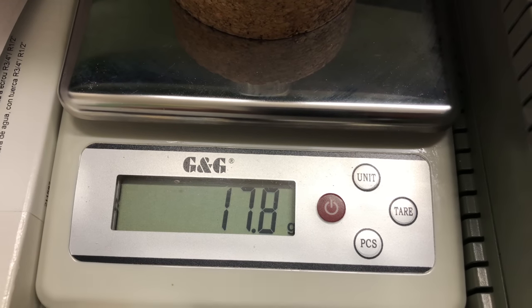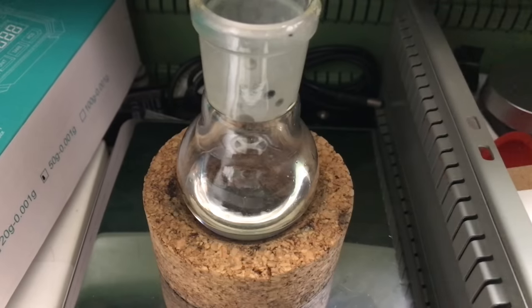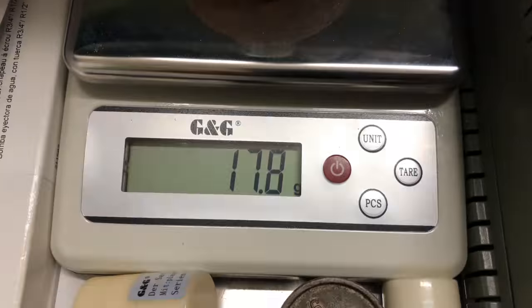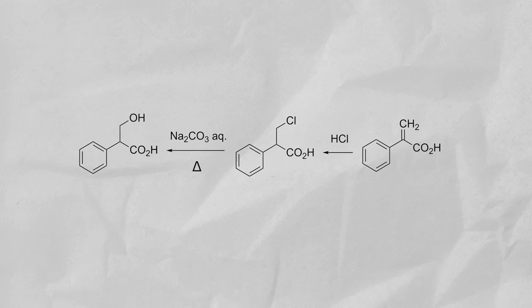After transferring it to another flask, we were left with 17.8 grams of methyl atropate, which corresponds to a yield of about 38.3%.